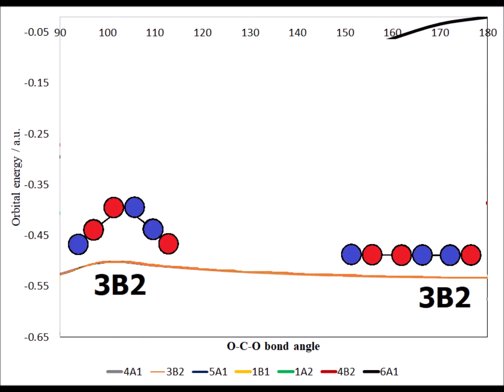3B2 features sigma bonding between a 2p orbital on the central carbon and p orbitals on the oxygens.